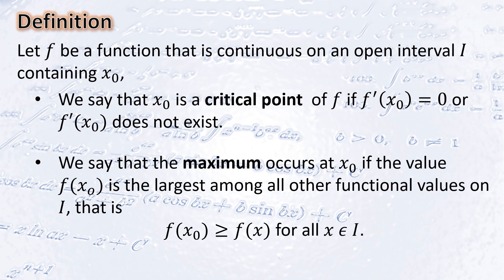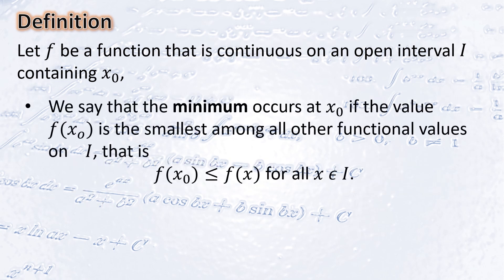We say that the maximum occurs at x₀ if the value f(x₀) is the largest among all other functional values on the interval I. That is, f(x₀) ≥ f(x) for all x in interval I. We say that the minimum occurs at x₀ if f(x₀) is the smallest among all other functional values on interval I. That is, f(x₀) ≤ f(x) for all x in interval I.